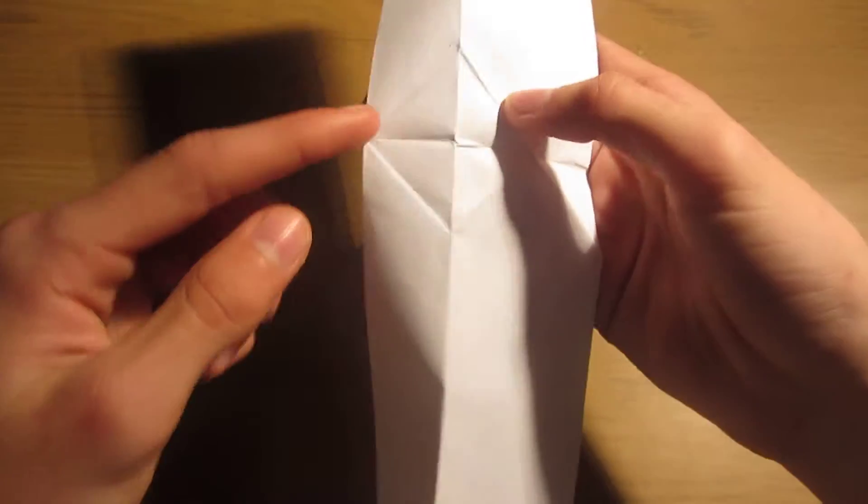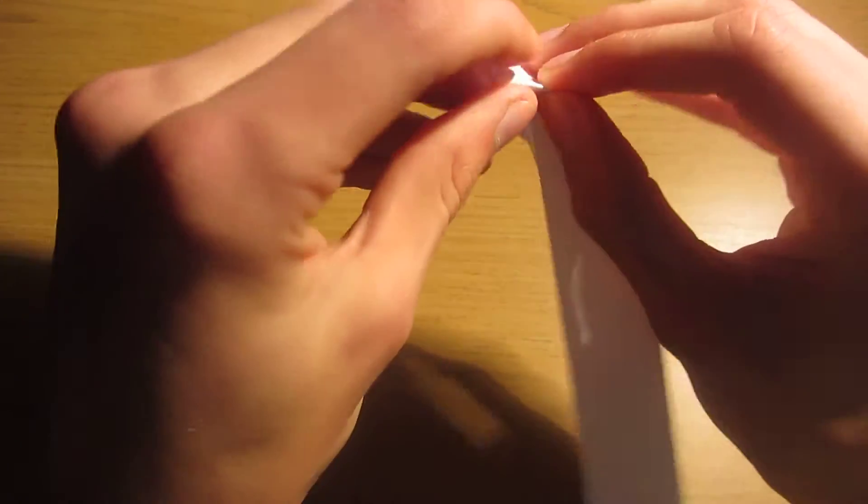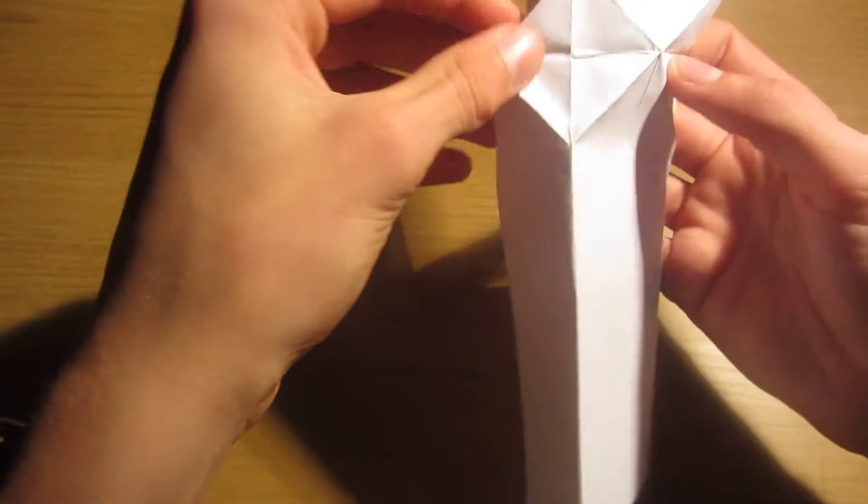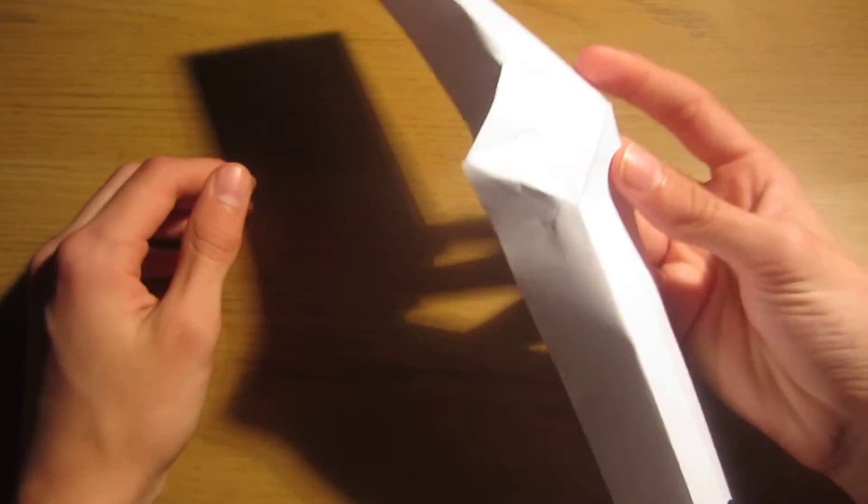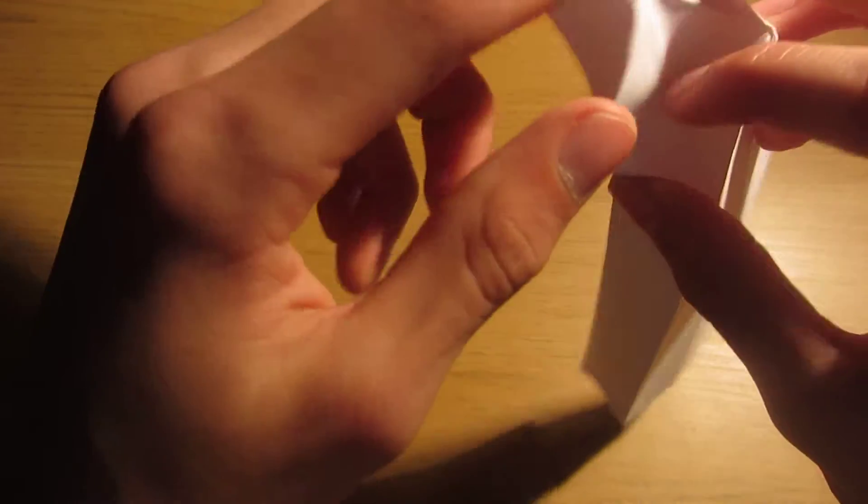So now, once we've got a mountain fold, we turn it over. And we're going to mountain fold the outside of the square. Like this. So now we have our square done.